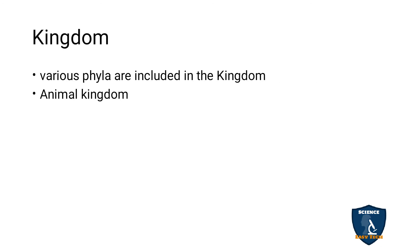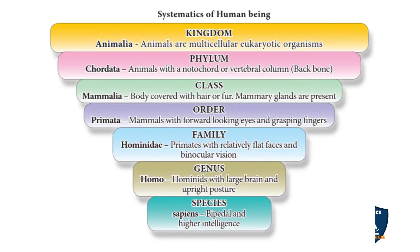Kingdom is the highest level, where various phyla are grouped together. There are two kingdoms: the Animal Kingdom and the Plant Kingdom. Since we are dealing with Zoology, we focus on the Animal Kingdom.